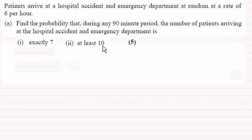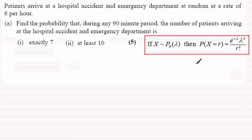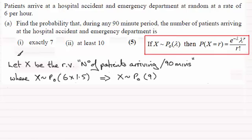So carrying on from there we realized that this was a Poisson distribution and I just gave you a brief reminder of the formula that we use. We defined a random variable X - let X be the random variable number of patients arriving per 90 minutes.